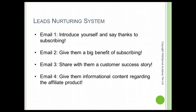The fourth email: give them informational content regarding the affiliate product. This fourth email is not selling but it's really telling them and educating them about the products that you are promoting. For example, if you're promoting a product that can reduce high blood pressure, you can tell them and inform them what are some of the foods that they can eat or avoid so that they can have lower blood pressure.